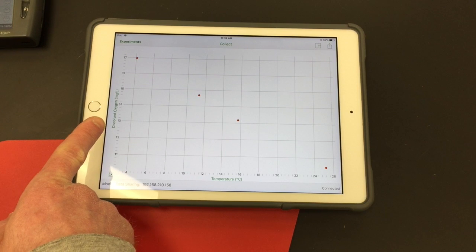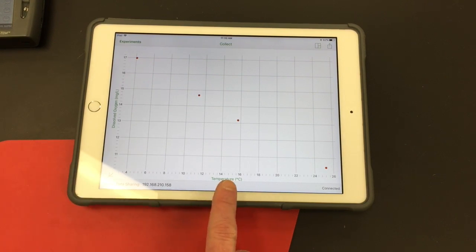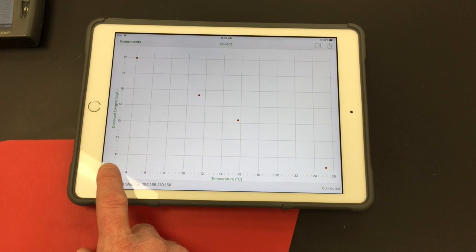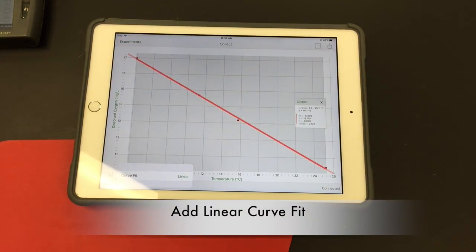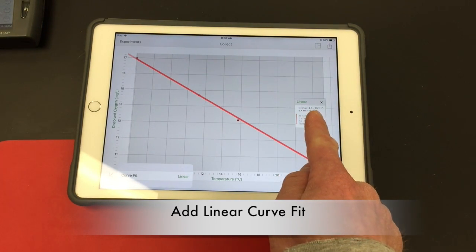Okay, so now I have dissolved oxygen on the y and temperature on the x. And then I'm going to add a curve fit. So I'm going to go into the bottom left, apply curve fit. It's going to be a linear curve fit. So I get my y equals mx plus b.